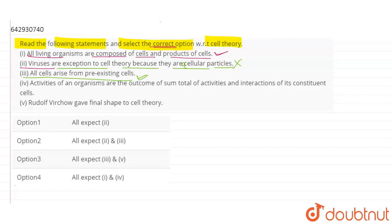It is a subtype that all cells arise from pre-existing cells. Next is here, which says that activities of organism are the outcome of the sum total activities and the interaction of the constituents of cells.